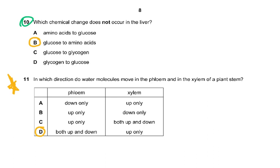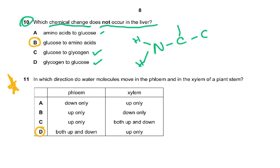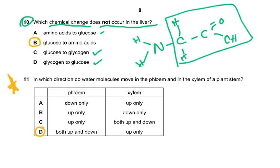Question ten: which chemical change does not occur in the liver? Glucose to glycogen — yes, that occurs. Glycogen to glucose — yes, during fasting. Amino acids to glucose — yes, by deamination, where the amino part is removed and the remaining carbon skeleton is converted into a glucose molecule.